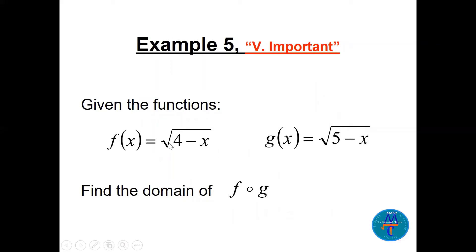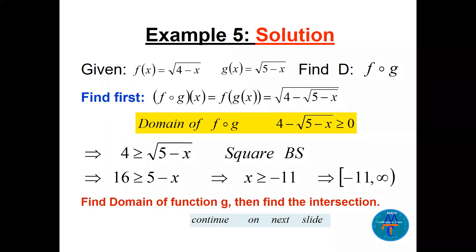Given f(x) = √(4 − x) and g(x) = √(5 − x), find the domain of f∘g. First, find f∘g: f(g(x)) = √(4 − √(5−x)). To find the domain, take the radicand: 4 − √(5−x) ≥ 0, so √(5−x) ≤ 4, square both sides: 5 − x ≤ 16, giving x ≥ −11. So the domain from this condition is [−11, ∞). But this is not the final domain.